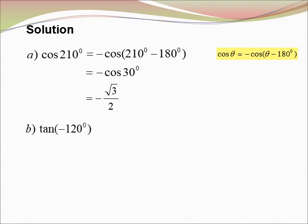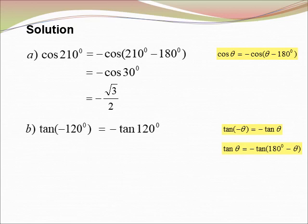B) tangent(−120°). We know that tangent(−θ) equals negative tangent θ, so tangent(−120°) equals negative tangent 120°. Since 120° is in the second quadrant, tangent is negative there. Using (180° − θ), tangent 120° equals negative tangent(180° − 120°) = negative tangent 60°. Negative times negative gives positive, so the result equals tangent 60°, and the special angle for tangent 60° equals √3.